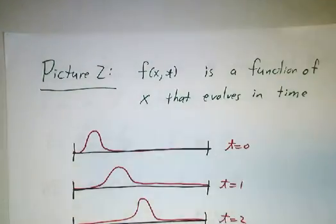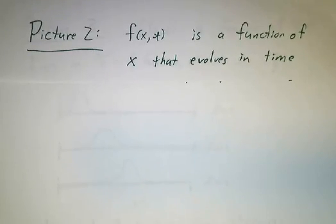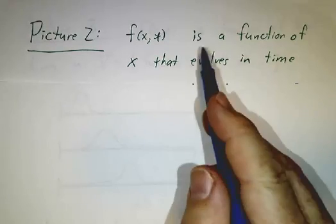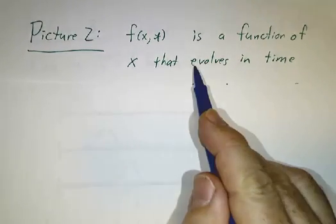But there's another way. Another way to think about f is to think of it not as a number that depends on x and t, but think of it as a function of x that evolves in time.